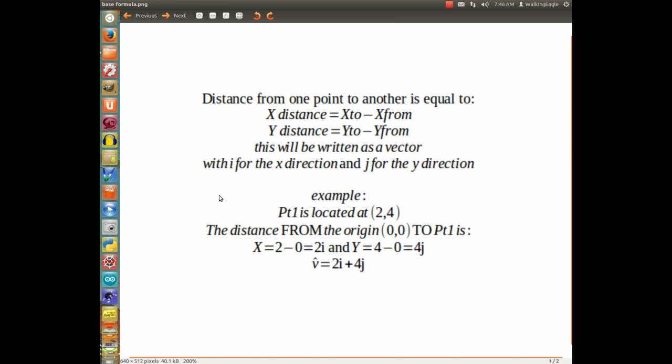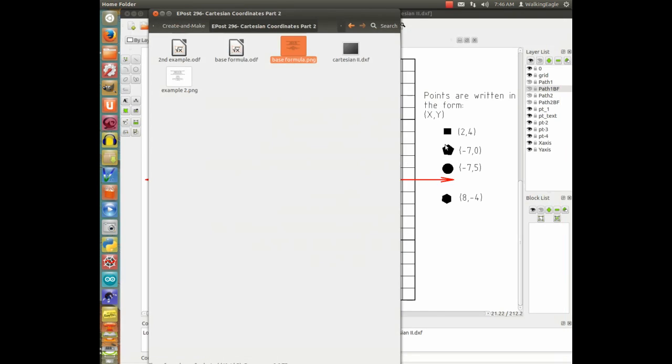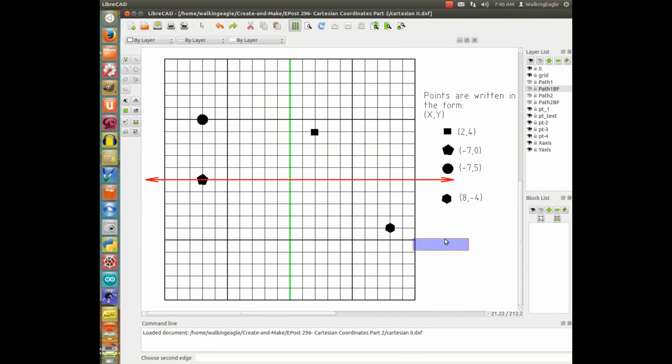All right, we'll do another example here. So let me close this screen. We're going from point 1, right here, at 2 comma 4, to the point that we're going over here, is point 2, which is at minus 7 comma 0.